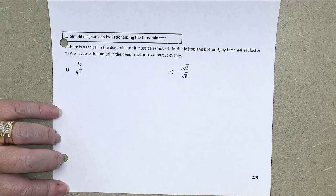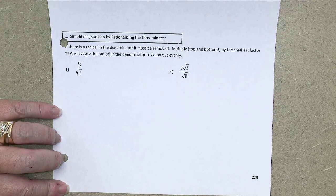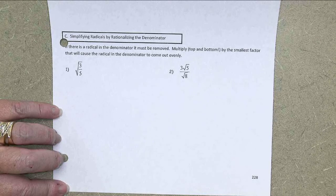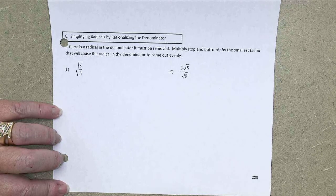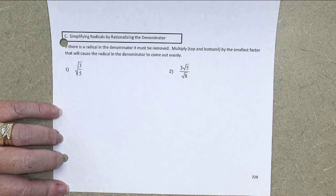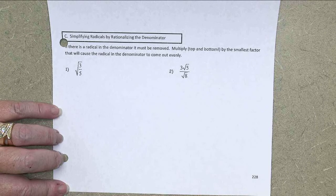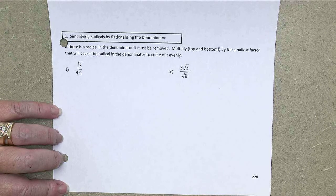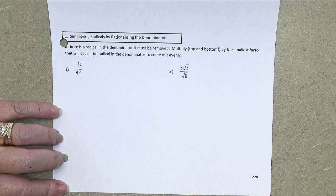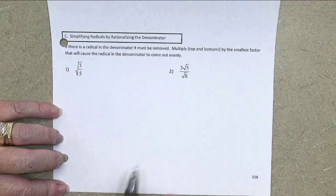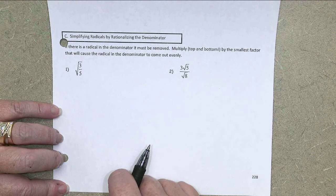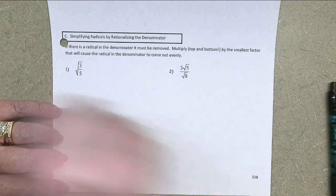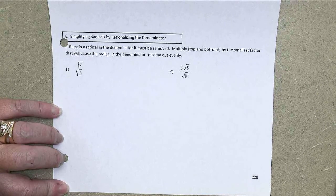This is Section 4.8, Part C. We were just looking at trying to make the denominators of our fractions come out evenly when we take a square root or cube root or whatever we're doing. But sometimes, no matter what we do with our fraction, it's not going to work out just by choosing to reduce or not reduce. In that case, we have to use a process called rationalizing the denominator.